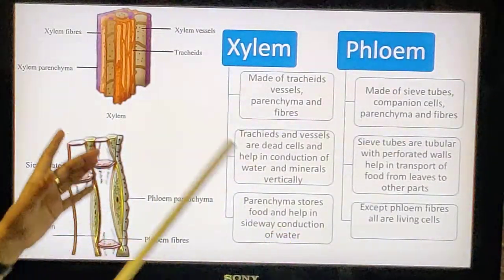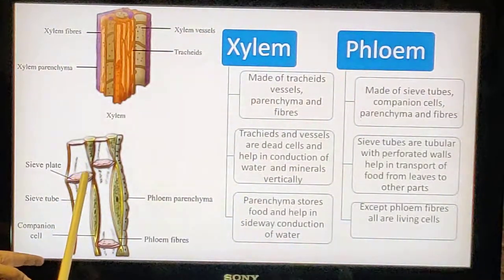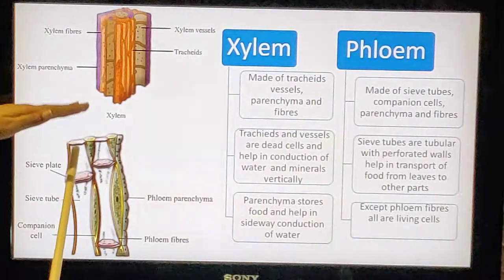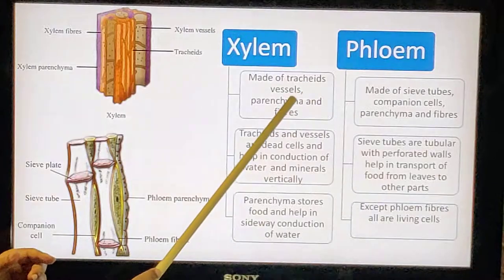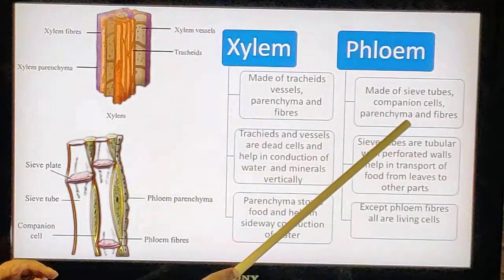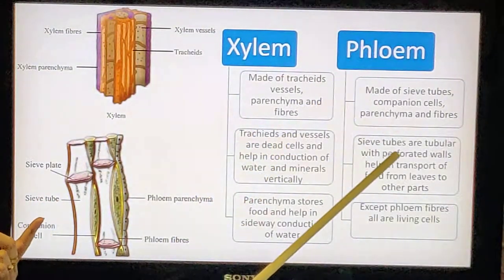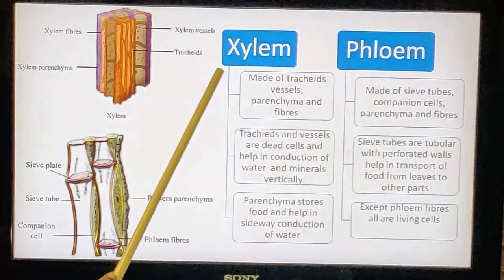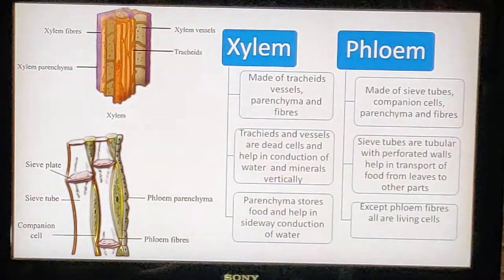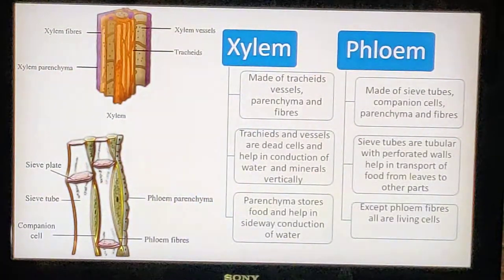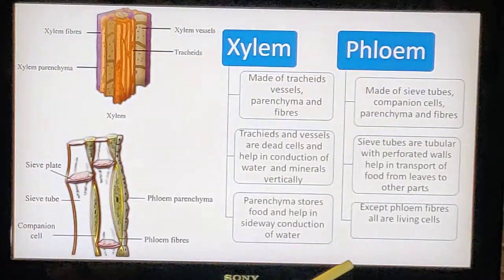For the exam, you can see differences between xylem and phloem. First: xylem is made up of tracheids, vessels, parenchyma, and fibres; phloem is made up of sieve tubes, companion cells, parenchyma, and fibres. Second: in xylem, tracheids and vessels help in conduction of water; in phloem, sieve tubes help in translocation of food. Third: in xylem, parenchyma stores food and helps in sideway conduction; in phloem, except phloem fibres, all are living cells. Also include direction: in xylem it is vertical; in phloem it is in all directions — that is a very important point to write in the exam.